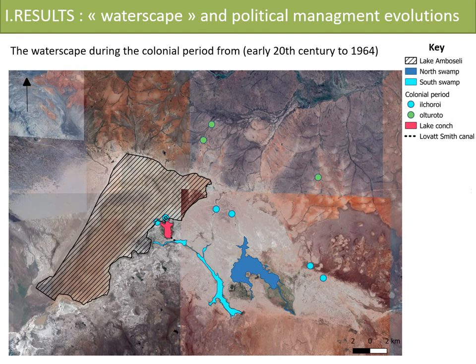Then comes the colonial period, from the beginning of the 20th century to 1964, marked by new policies for the management of land and wildlife, requiring the first development of ilchamus and ol roto — meaning wells and shallow wells in Maasai — as you can see on the map. These infrastructures were made to keep cattle away from Lake Amboseli, the swamps and the new Maasai game reserve established in 1948, so that it could accommodate wildlife and tourists as a priority. At the same period, there is the implementation of the Lovat-Smith Canal, which results in the creation of an artificial reservoir called Lake Conch.